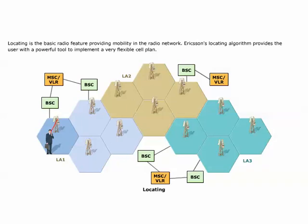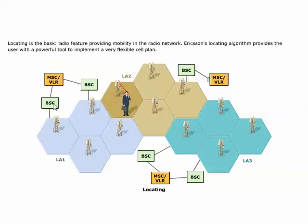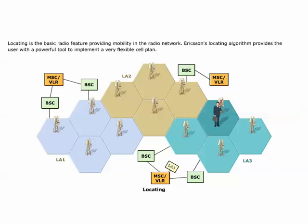Locating is the basic radio feature providing mobility in the radio network and is the base on which other features, such as HCS and assignment to another cell, are built. The design cell plan is implemented in locating with parameters for power settings, handover borders, etc. Ericsson's locating algorithm provides a powerful tool to implement a flexible cell plan with handover borders adapted to the radio environment, minimizing interference and maximizing capacity. The auxiliary radio network features are very important to optimize the functionality and performance of the radio network.